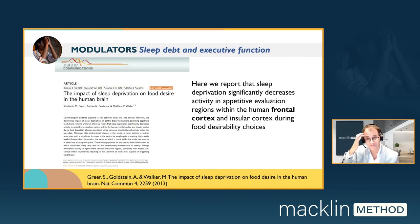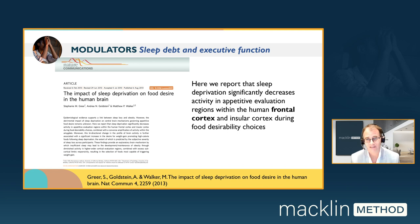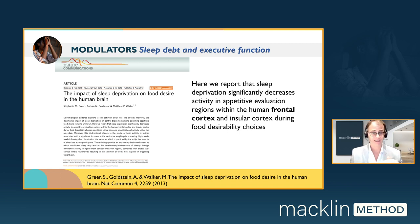What about executive function and sleep? A 2013 paper describes that sleep deprivation significantly decreases activity in the appetite evaluation regions within the human frontal cortex — think dorsolateral prefrontal cortex, think system two, think a sleepy executive — during choices around food desirability. Again, decreased executive function and decreased restraint capacity are consequences of sleep debt.